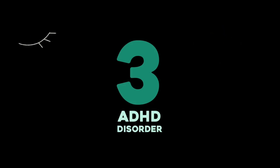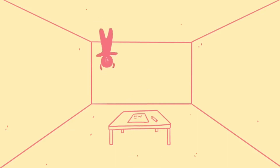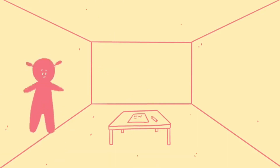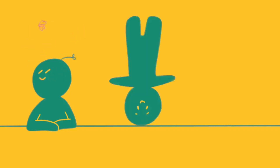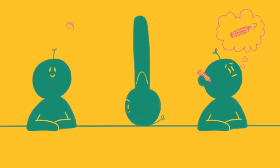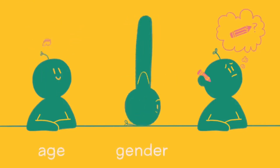3. Attention Deficit Hyperactivity Disorder. When we say ADHD, the stereotype is usually a small child who's bouncing off the walls or can't finish a task. However, between 7.8% and 11% of children aged 4 to 17 are diagnosed with ADHD in any given year. ADHD affects people of all ages and includes multiple symptoms such as inability to concentrate, forgetfulness, inability to sit still, restlessness, and losing things. An individual's symptoms vary depending on their age, gender, and type of ADHD.